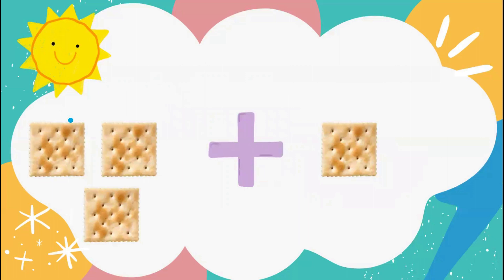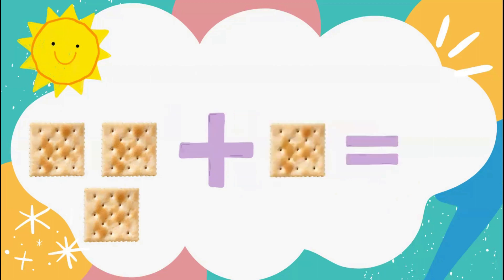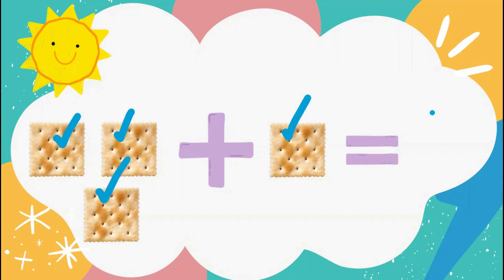Here I have 3 plus 1. Three plus 1 equals? Let's count it out: 1, 2, 3, 4. Good job — 3 plus 1 equals 4.